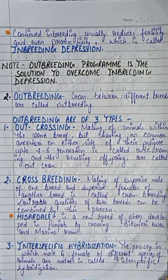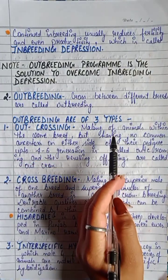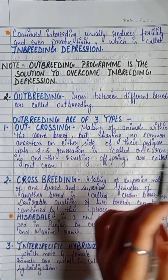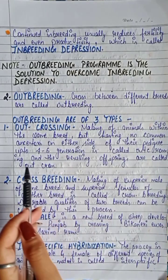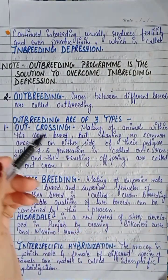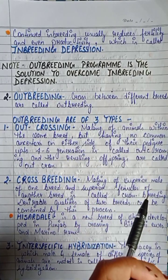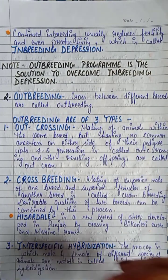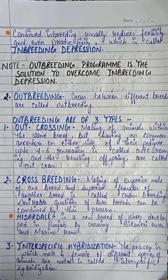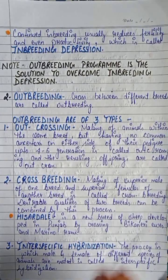Outbreeding is of three types. First is out-crossing: mating of animals within the same breed but having no common ancestor on either side of their pedigree up to five to six generations. This is called out-crossing and the offspring produced is called an out-cross.